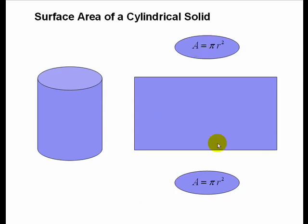The area of each circle is pi r squared, and then this top edge of the rectangle is the same thing as the circumference of this cylinder. And so we have a formula for the circumference, and it must be the same as the length along the top of this rectangle.